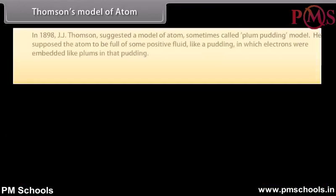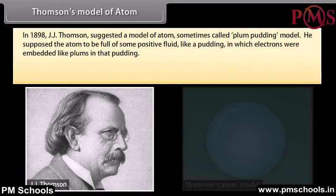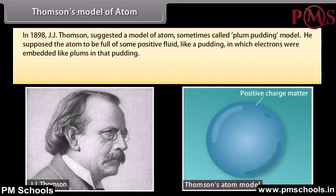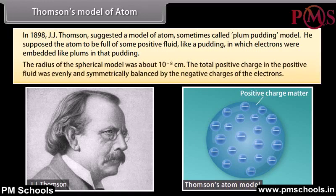Thomson's model of atom. In 1898, J.J. Thomson suggested a model of atom, sometimes called the plum pudding model. He supposed the atom to be full of some positive fluid, like a pudding, in which electrons were embedded like plums in that pudding.